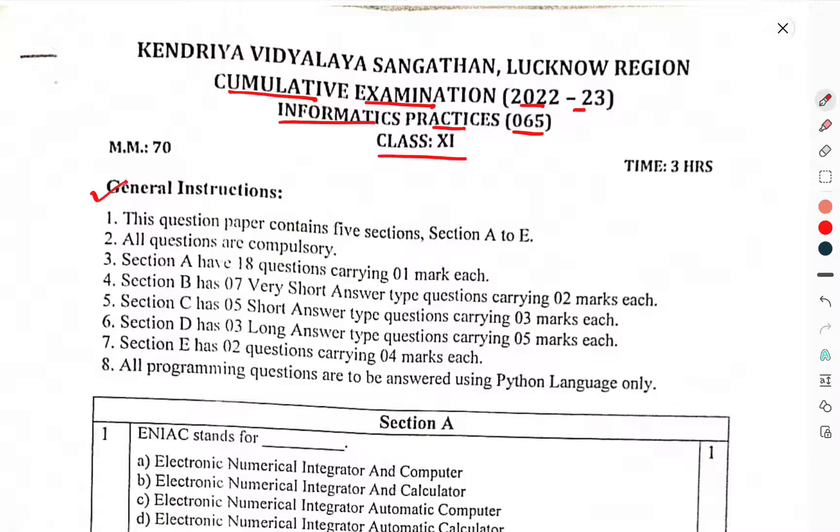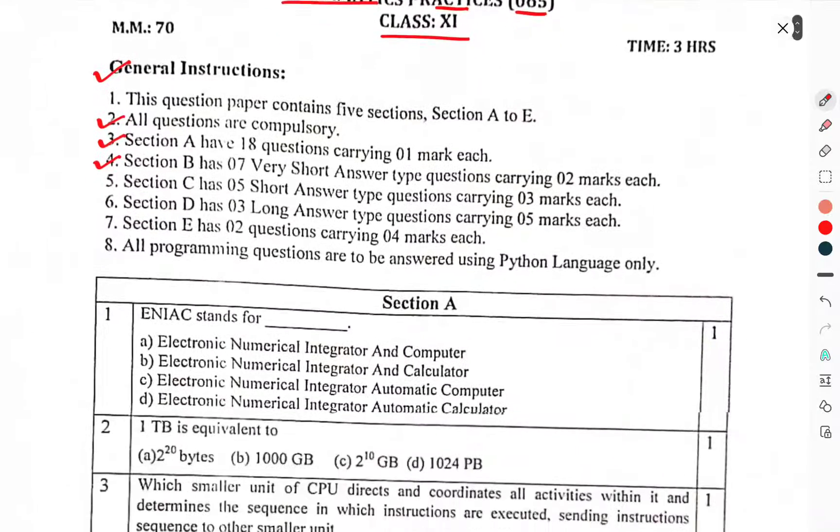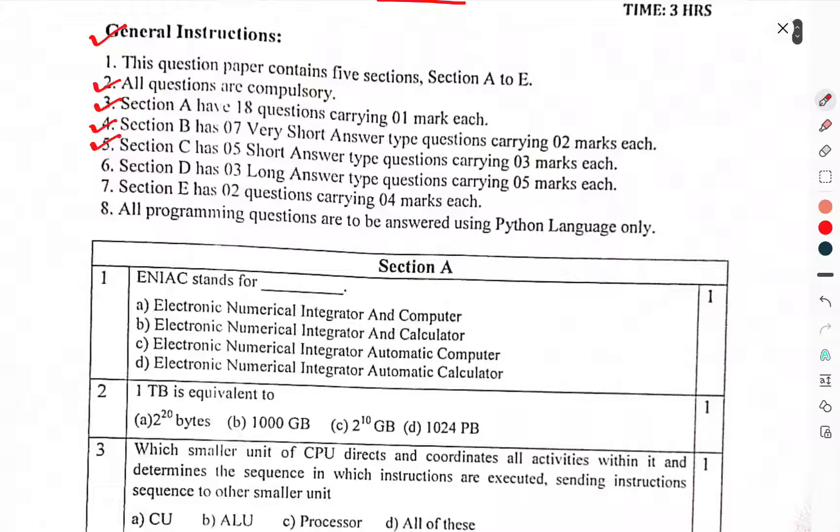Let's start with the General Instructions. The question paper contains 5 sections A to E. All questions are compulsory. Section A has 18 questions carrying 1 mark each. Section B has 7 very short answer questions carrying 2 marks each. Section C carries 5 short answer questions, 3 marks each. Section D carries 3 long answer type questions carrying 5 marks each. Section E has 2 questions carrying 4 marks each. All programming questions have to be answered using Python language.